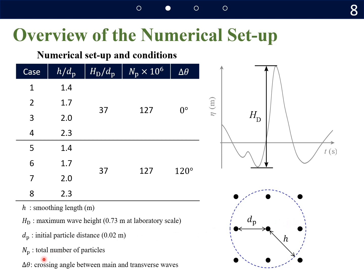We used the initial particle distance of 0.02 meter, which corresponded to H_D/dp value of 37, which shows how many particles are sitting on the maximum wave height of the Draupner wave.